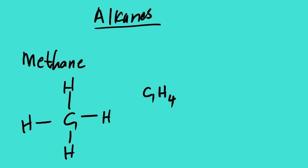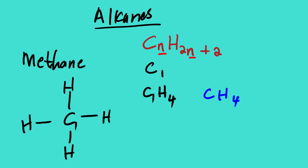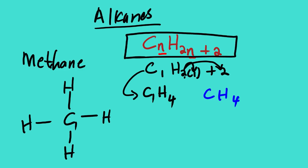Looking at the condensed formula, it will be the same as our molecular formula. There is a general equation to generate the molecular formula of alkanes which is CnH(2n+2). In this case n is the number of carbons. With one carbon: C1H(2×1+2) = C1H4. This general formula only works with alkanes.